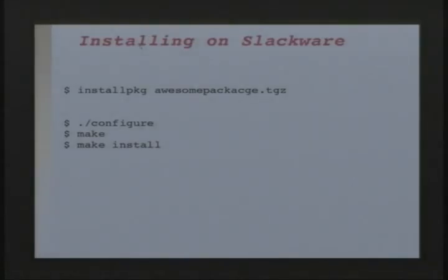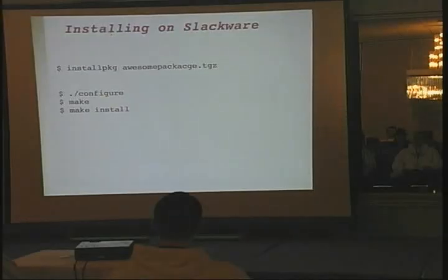If you want to install something on Slackware, if you download a Slackware package (.tgz), you type 'installpkg' and the name of the thing, and it will install it if whoever made the .tgz did it right. The usual way of installing something in Linux is there's a configure file you run, then 'make install', and it compiles it for you.